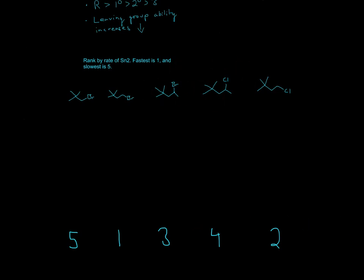Now, between these two, these two are exactly the same. So this is secondary. This is secondary. Once again, the only difference is between the leaving group. This is bromine. This is chlorine. So bromine will be better than chlorine. So this will be 3. This will be 4. So that's why the order is 1, 2, 3, 4, 5.